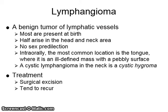Lymphangioma is a benign tumor of lymphatic vessels, which is present at birth. Half of them arise in the head and neck area and there is no sex predilection. Intraorally, the most common location is the tongue, where it presents as an ill-defined mass with a pebbly surface. A cystic lymphangioma in the neck is called a cystic hygroma. Treatment is surgical excision, and they do tend to recur.